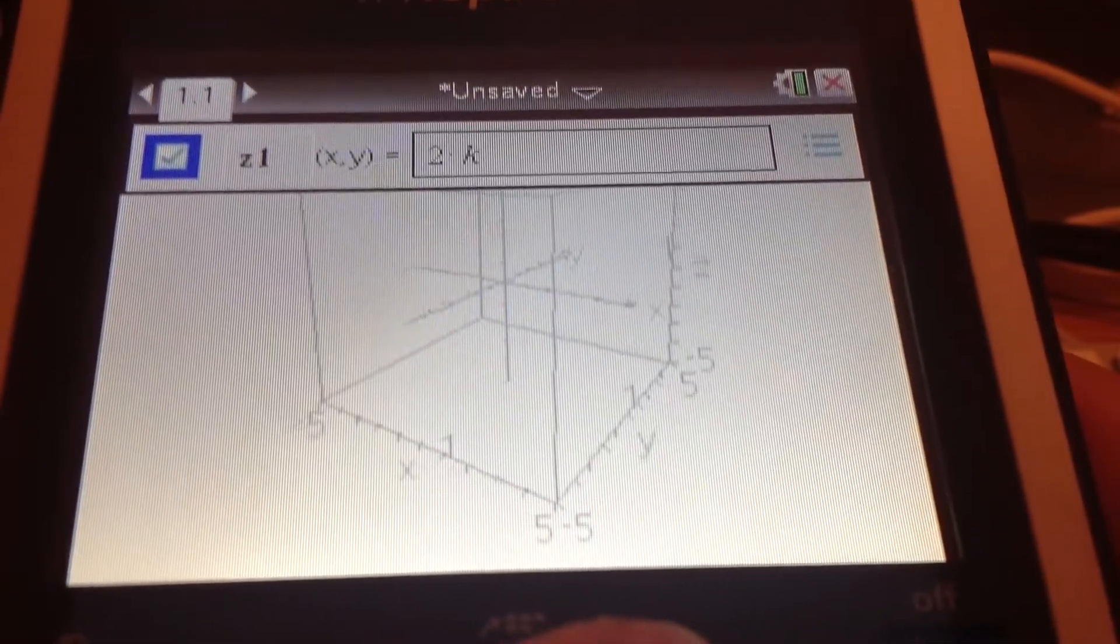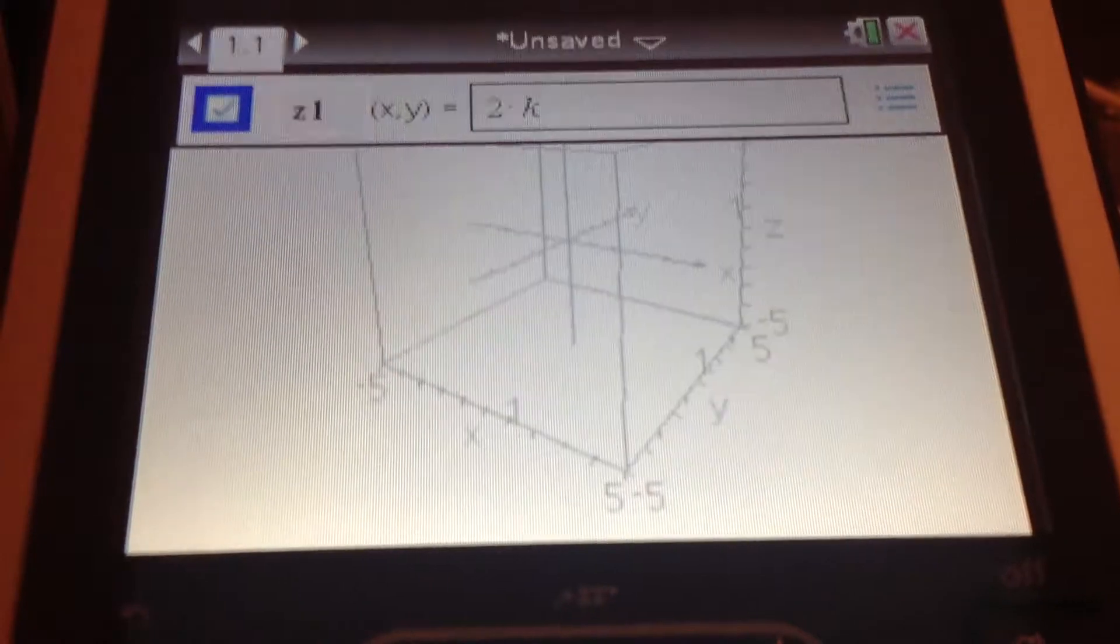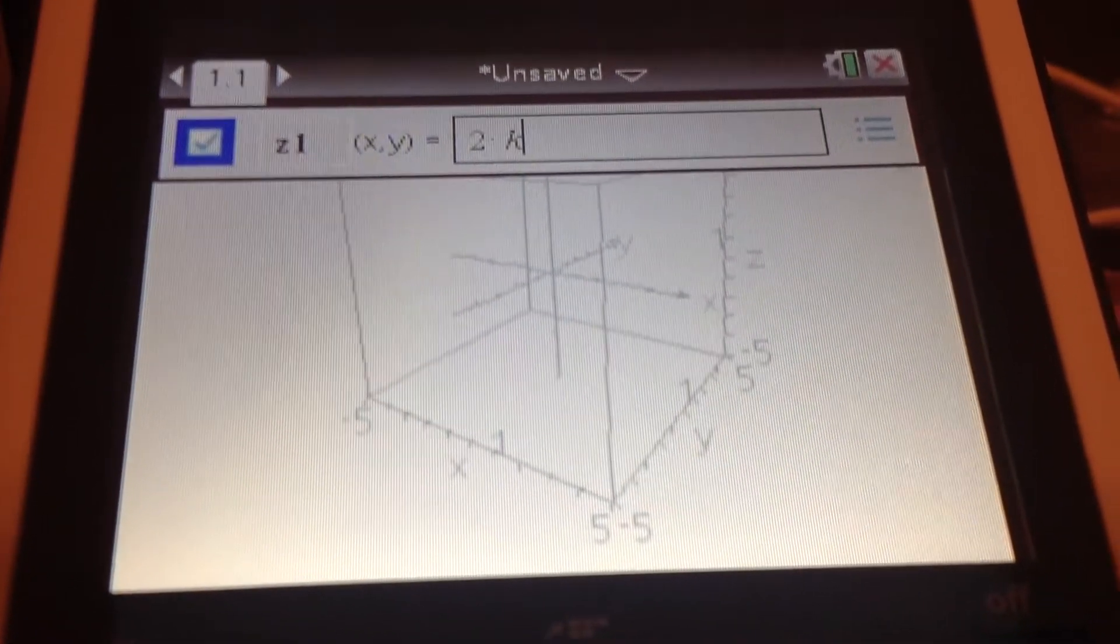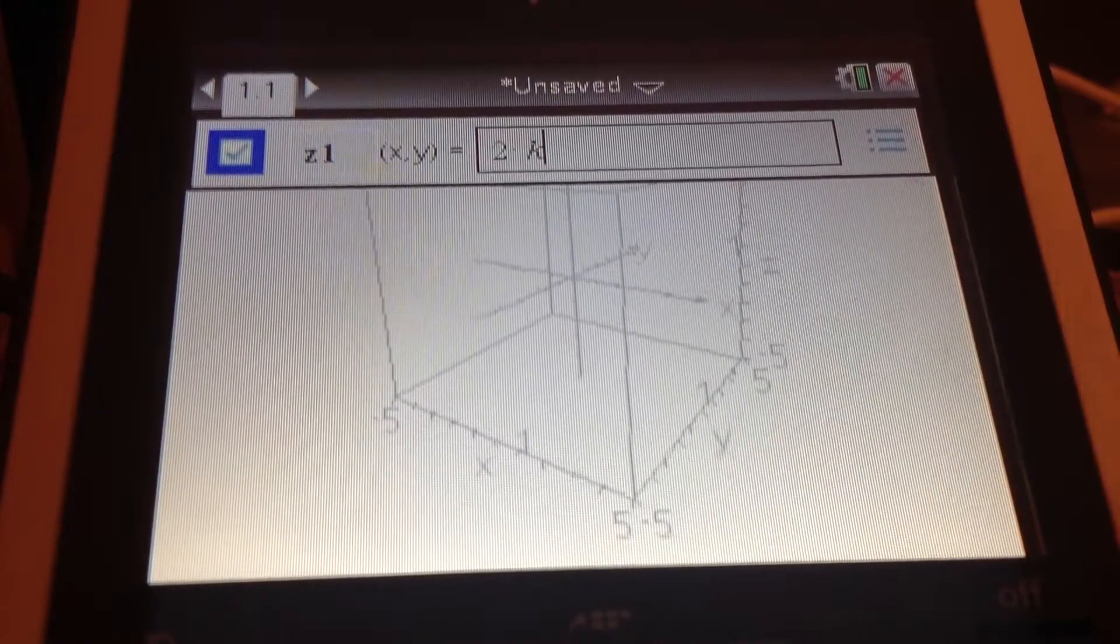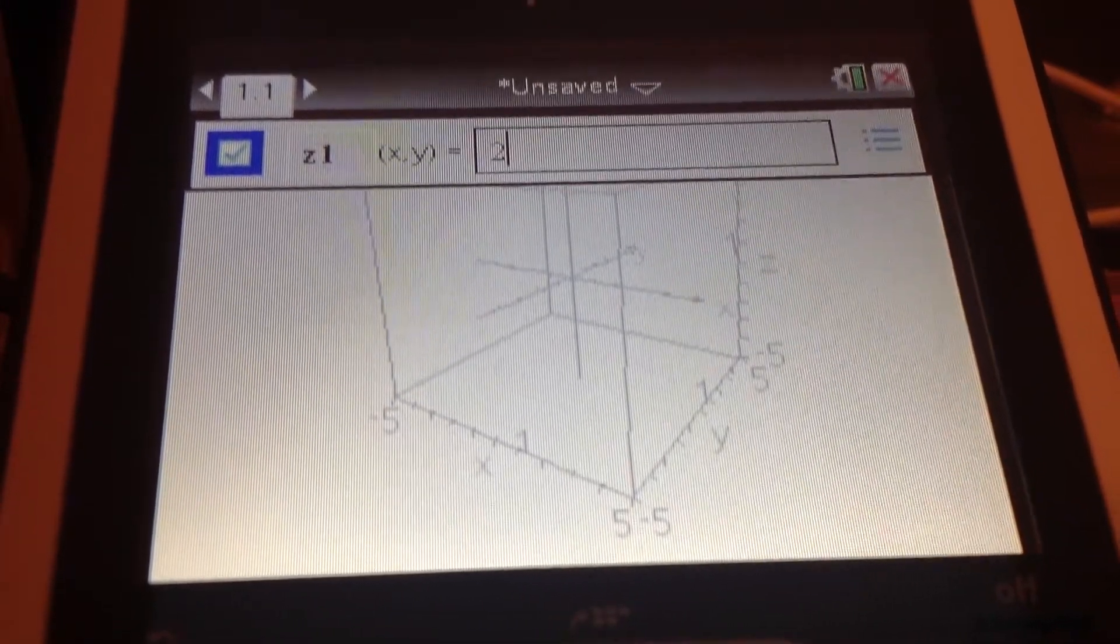Go back to the first one that says Z1, and then take your garbage equation or garbage information you put in, and then delete it.